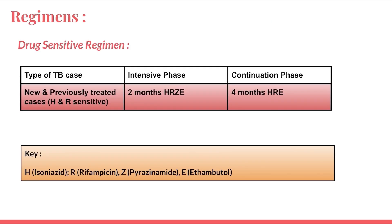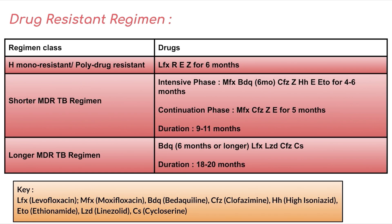For regimens, there are two main types: drug-sensitive and drug-resistant. The drug-sensitive regimen covers newly and previously treated cases sensitive to isoniazid and rifampicin. It has two phases: an intensive phase of two months with H, R, Z, E, and a continuation phase of four months with H, R, E. This is straightforward. For drug-resistant regimens, there are three options.